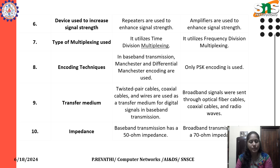Regarding the types of multiplexing used: in baseband transmission it utilizes time division multiplexing, whereas in broadband transmission it utilizes frequency division multiplexing. Regarding encoding technique: in broadband transmission, only PSK encoding is used.